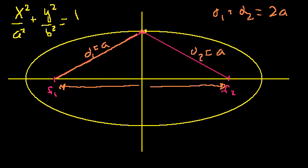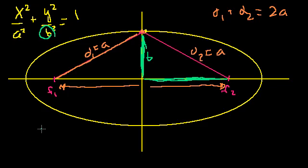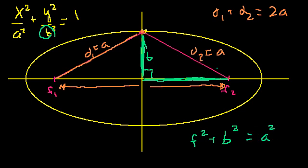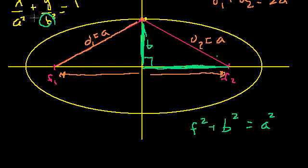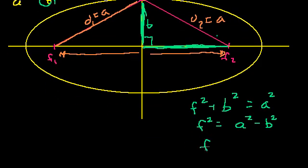This should pop into your brain as a Pythagorean theorem problem. We have the focal length f, the semi-minor radius b, and the hypotenuse d2 which equals a. So f squared plus b squared equals a squared. This gives us a nice equation in terms of a and b, which we know from the ellipse equation. Solving for the focal length: f squared equals a squared minus b squared, so f equals the square root of a squared minus b squared.